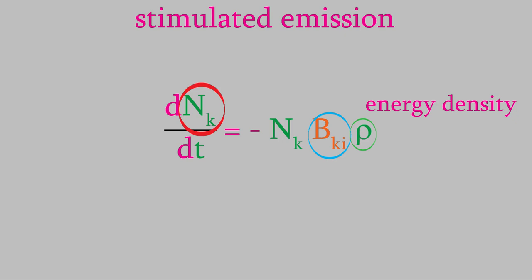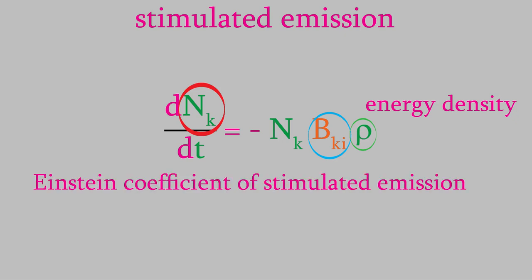The constant BKI is called the Einstein coefficient of stimulated emission, and it turns out that it's equal to the expectation value of the electric dipole moment of the molecule. By the way, the electric dipole moment has the symbol P, but it's not at all related to the momentum. Unfortunately, that can be a little bit confusing.